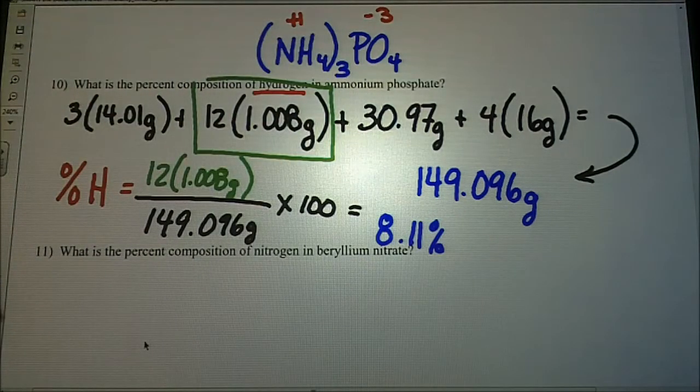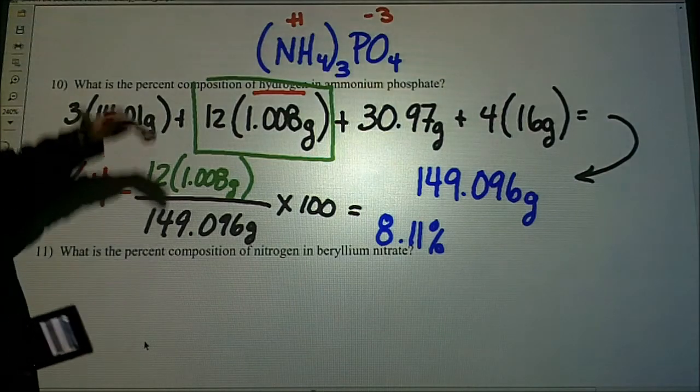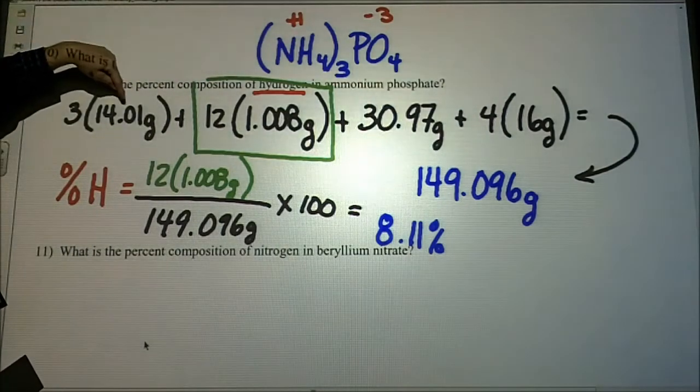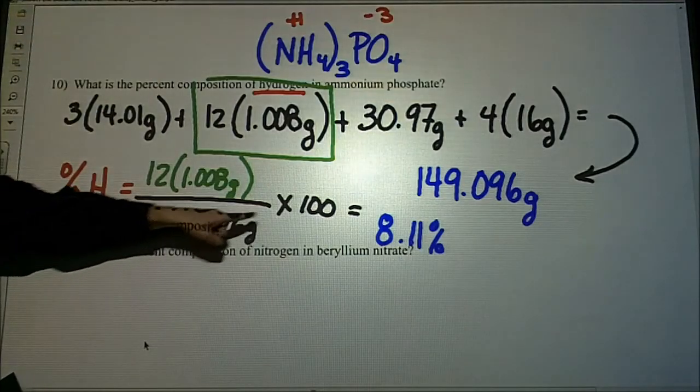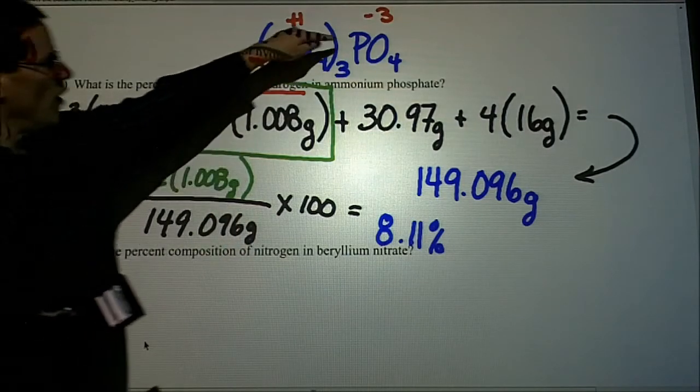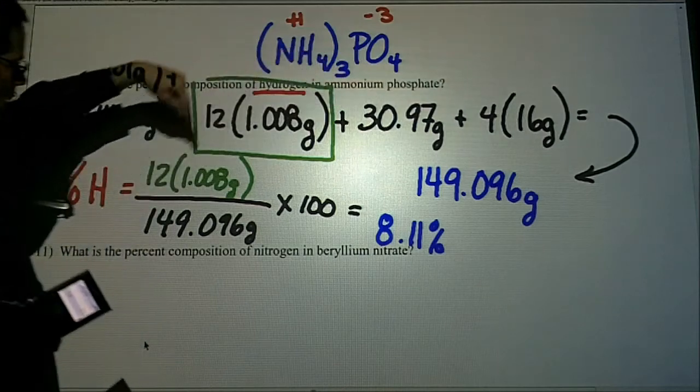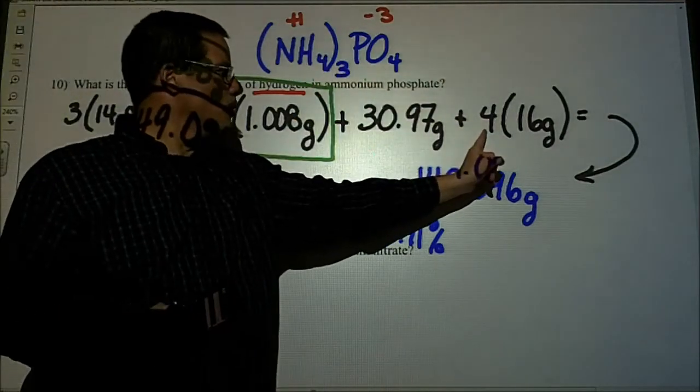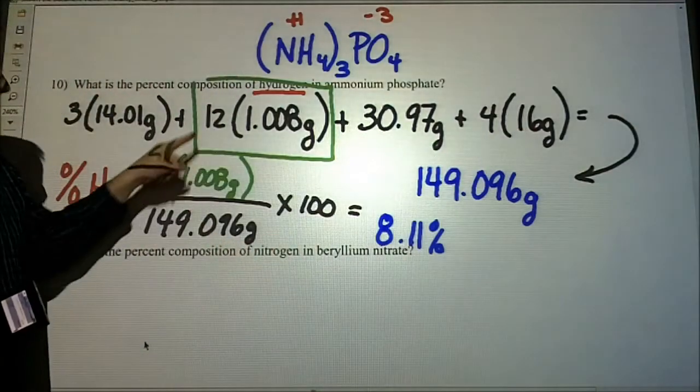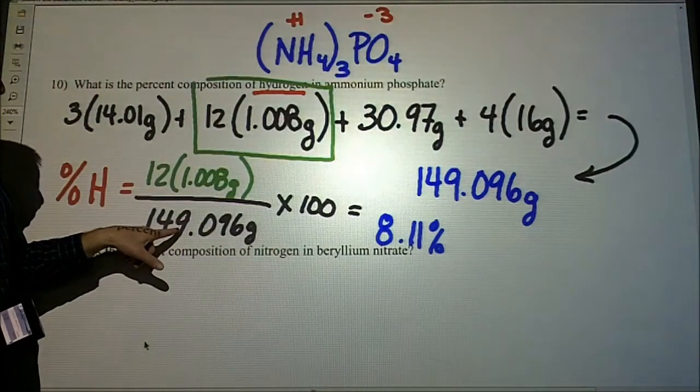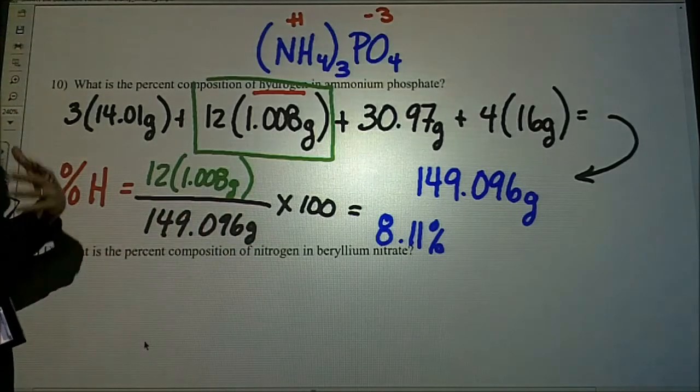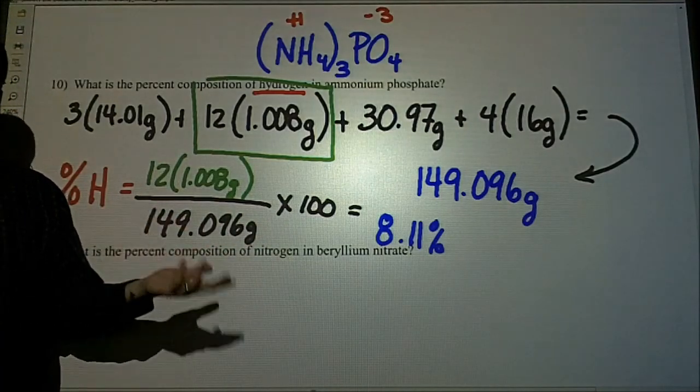So again, when finding percent composition, if you were asked to find all of these, then to find the nitrogen, you would do 3 times the 14.01, divided by the whole thing, times 100. To find the phosphorus, you do the 30.97 divided by the whole thing, times 100. To find the oxygen, you do 4 times 16 divided by the 149.096, times 100. And all of these, if you're rounding correctly, should be 100%.